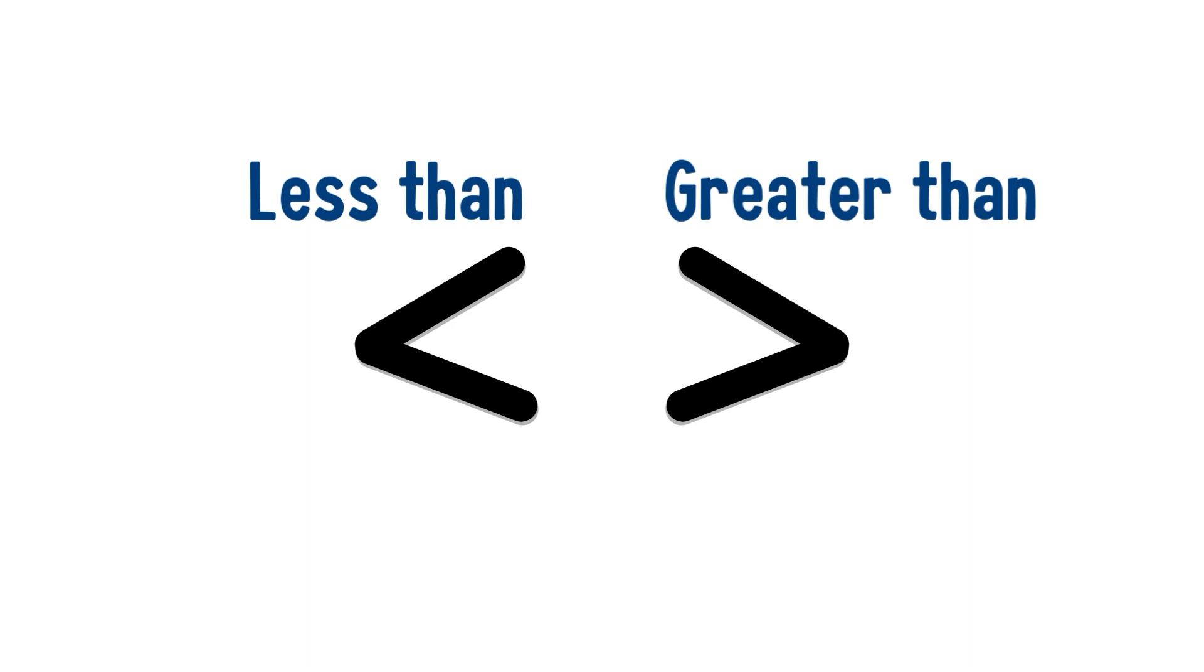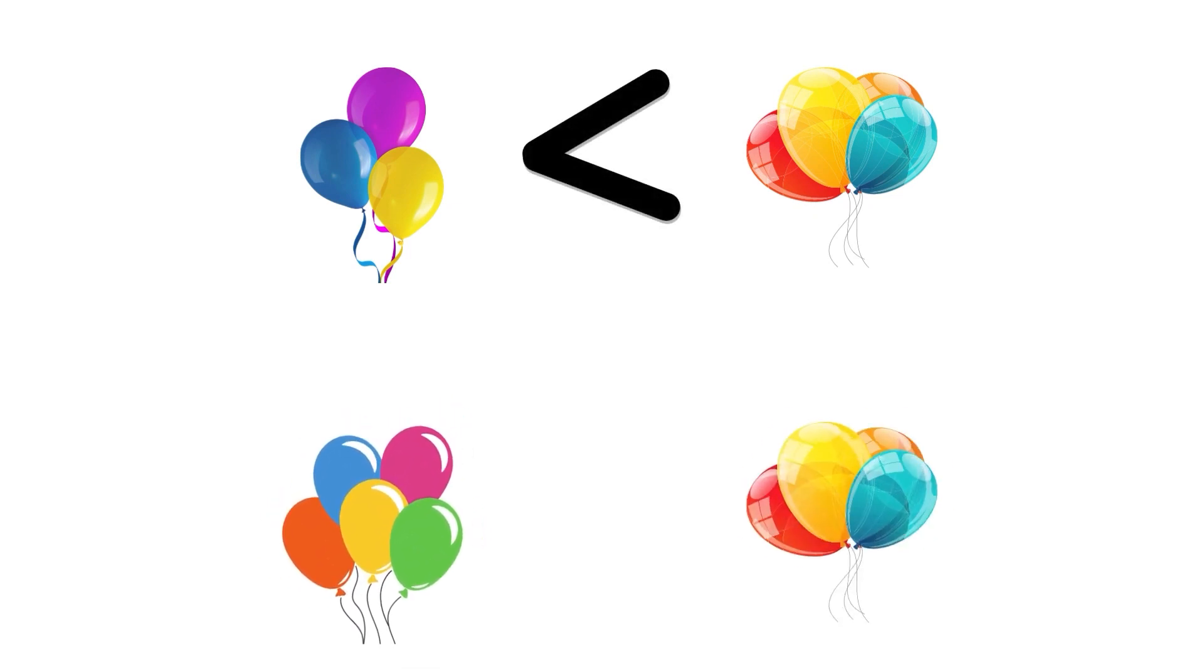For instance, having three balloons is less than having four balloons. So, we can say that three is less than four, but having five balloons is greater than having four balloons. This time, we can say that five is greater than four.